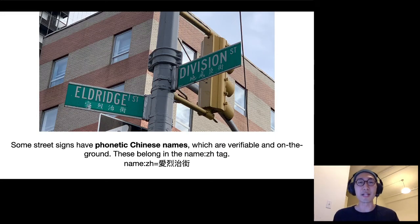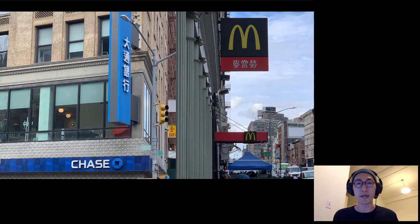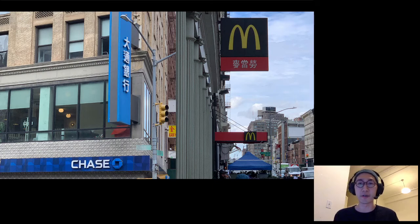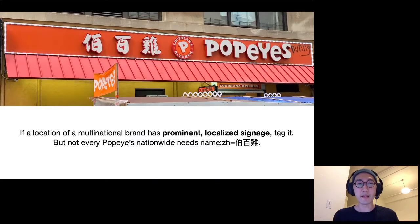On the other hand, there are phonetic names for many Chinese street names in Chinatown, and since these are verifiable, these belong in the name:zh tag — I've added a couple of these to OpenStreetMap. There are also chain brands such as Chase Bank or McDonald's that have Chinese signage, and these are also valid for inclusion in OSM. A good guideline is that if a location of a multinational brand has prominent localized signage, it should be tagged — but not every Popeyes in the nation needs name:zh.